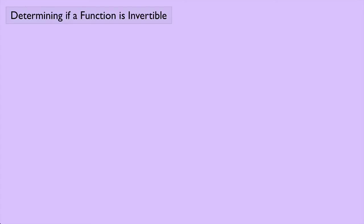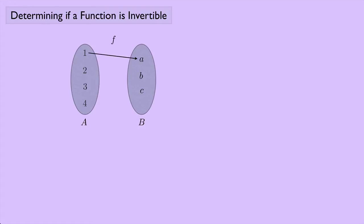Do all functions have inverses? Consider the function from a set A, which is the numbers 1, 2, 3, and 4, to a set B, which is the letters A, B, and C. I'll call this function F, and F is going to map 1 to A, 2 to B, 3 to B, and 4 to C.